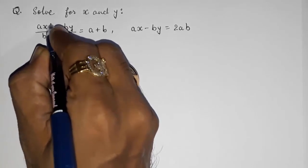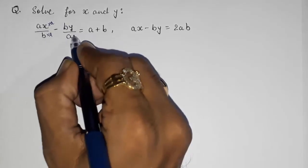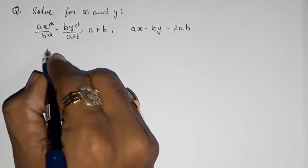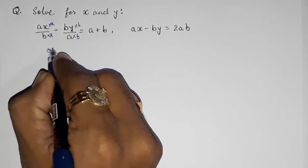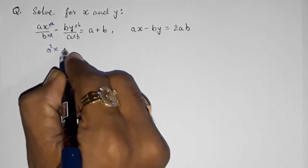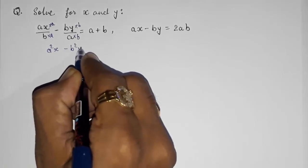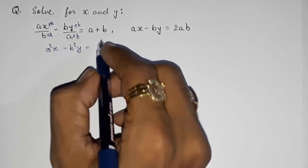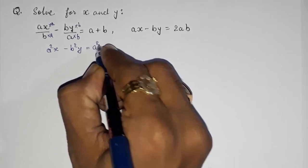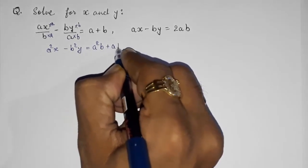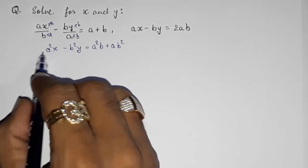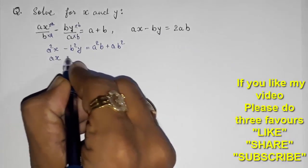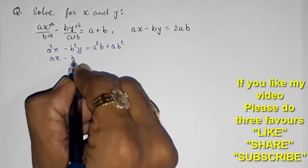I am going to multiply with a and b respectively. This will become (a²x minus b²y) upon ab. Multiplying through by ab gives a²b plus ab² on the right side. This is my first equation in standard form. The second equation is directly ax minus by equals 2ab.